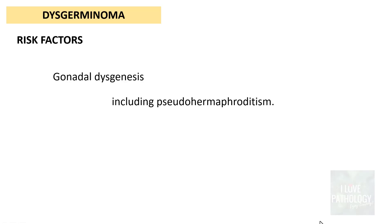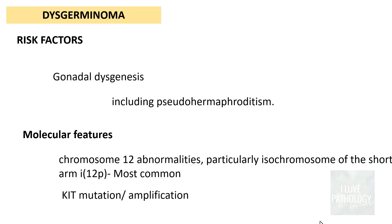The risk factors for dysgerminoma: since these are the most primitive germ cell tumors, patients who have gonadal dysgenesis, including pseudohermaphroditism, are at risk for development of these tumors. On molecular study, chromosomal 12 abnormalities — particularly isochromosome of the short arm of chromosome number 12 — are the most common finding. KIT mutation or amplification can also be seen in some cases.